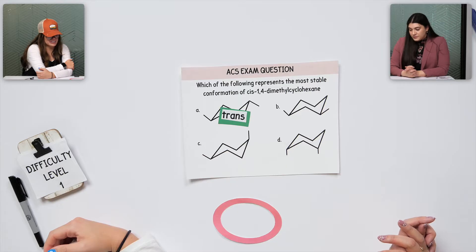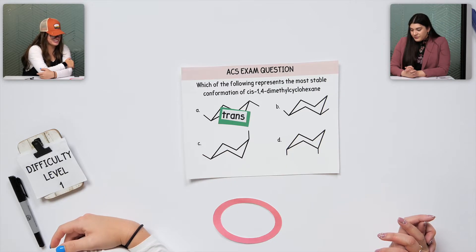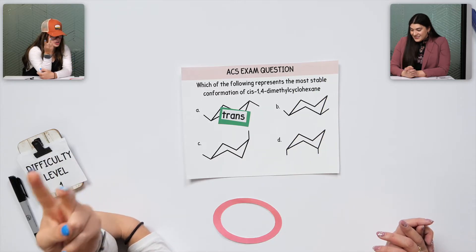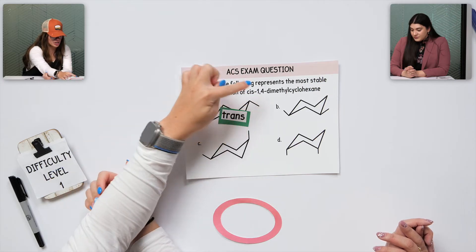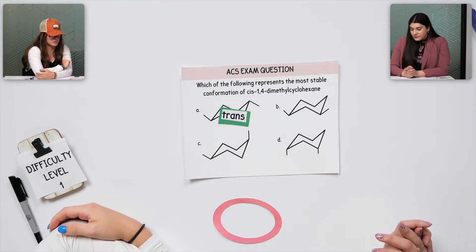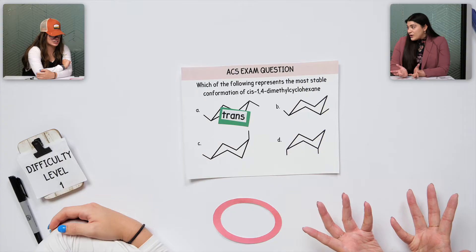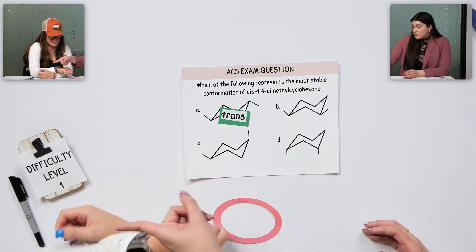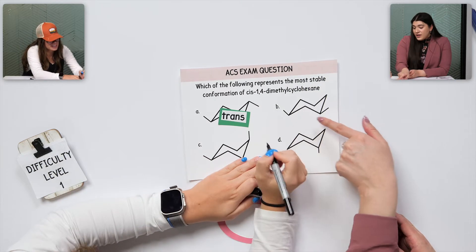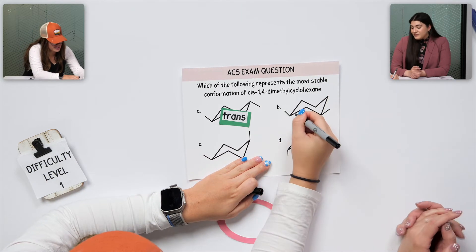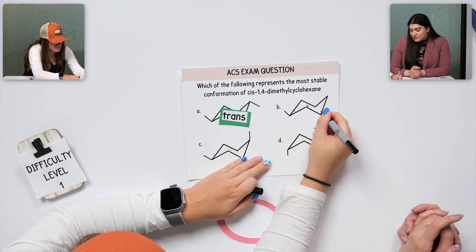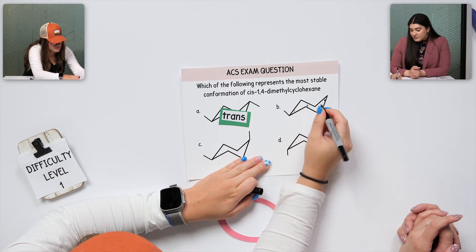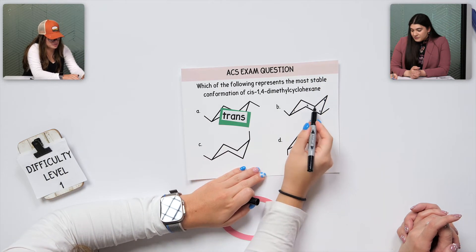Cis-1,4-dimethylcyclohexane. I actually don't know now — that's as far as I got. Because I know I have two methyl groups branching off at 1,4. I just don't know how to identify which one's 1,4. We'll number it. Can I just number it like 1, 2, 3, 4? Exactly. So 1, 2, 3 — I'll stop there because it'll technically go 5, 6.